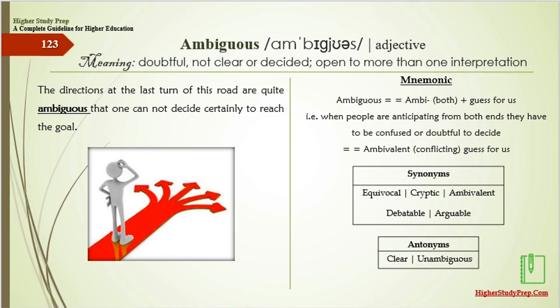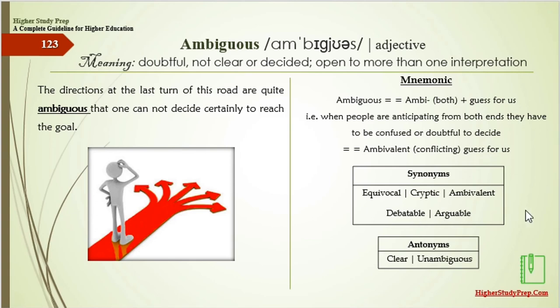The antonyms of sporadic are frequent, regular, or steady. Ambiguous means doubtful, not clear, or open to more than one interpretation. The directions at the last turn of this road are quite ambiguous, so one cannot decide with certainty how to reach the goal. Mnemonic: ambiguous — ambi means both, so when anticipating from both ends, people become confused or doubtful. The synonyms are equivocal, cryptic, ambivalent, debatable, or arguable.